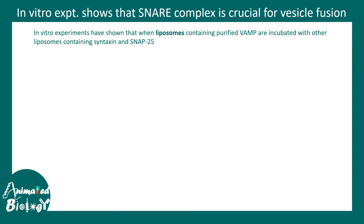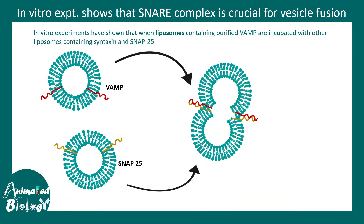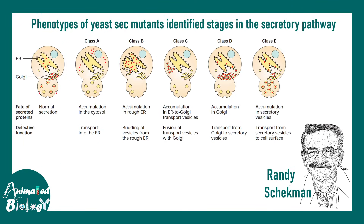All these ideas about SNAREs helping in membrane fusion come from many in vitro and in vivo assays. In in vitro assays, liposomes expressing VAMP and another type of liposome expressing SNAP-25 were mixed together — they led to membrane fusion, producing fused vesicles. This is how researchers established that SNARE complexes can actually help in membrane fusion.